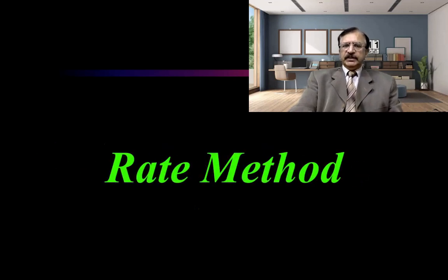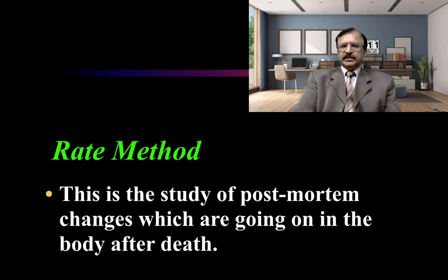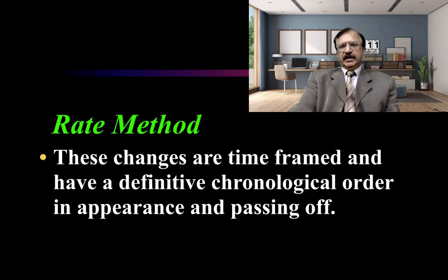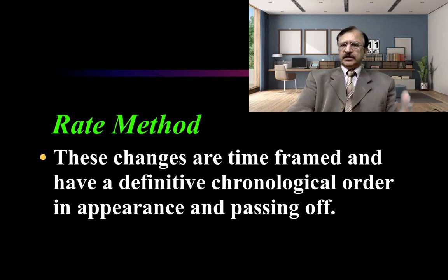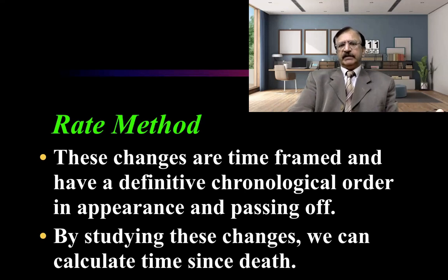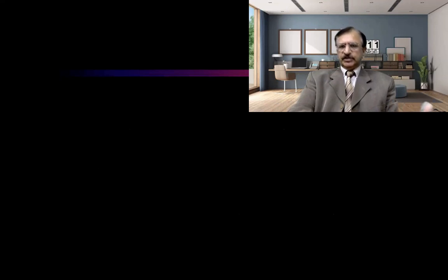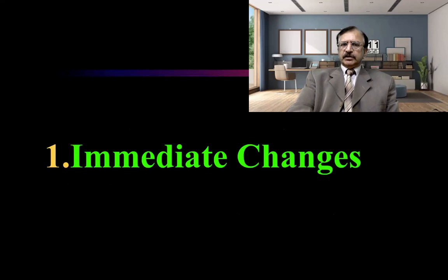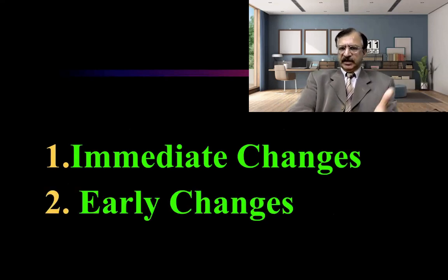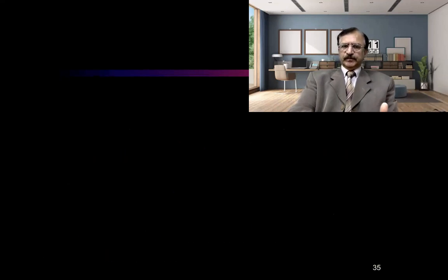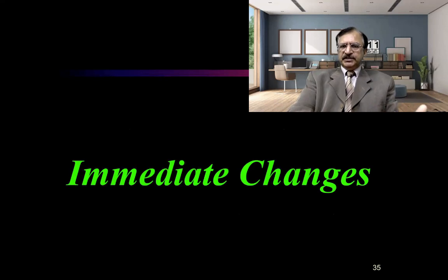Starting with the rate method — these are changes appearing after death and they have a chronological order of appearance and passing off, appearing and passing off in a time frame. By studying them we can give the time bracket. These changes are classified as immediate changes, the early changes, and the late changes. Now starting with the immediate changes.